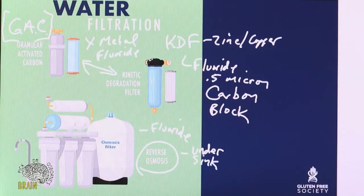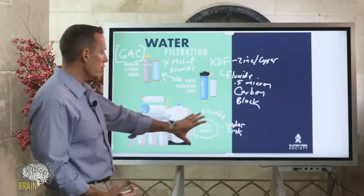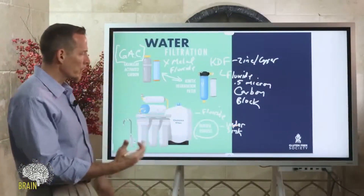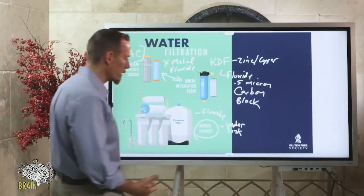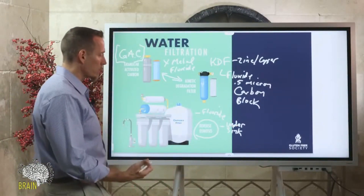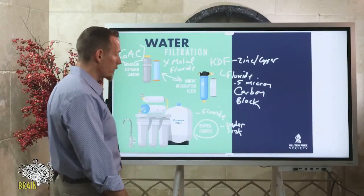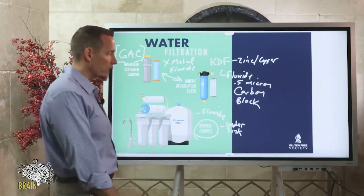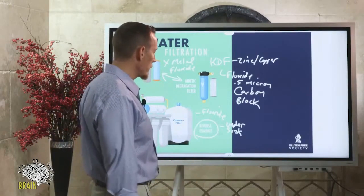You can get an undermount sink RO filter in the $500 range, so they're not overly expensive, and they last a really long time. So if you're buying bottled water to drink, that's something we're going to talk about here in just a minute — you don't want to do that.